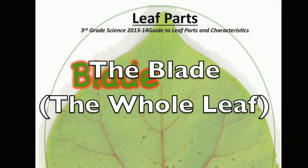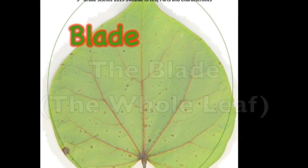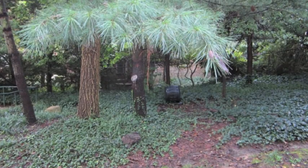Part 1: the blade, which is the whole leaf except the petiole. Blades can either be flat or needle-like. When we look at a leaf, the first part we look at is the blade. The blade is going to tell us some big general information that lets us narrow down the possibilities of what kind of tree the leaf came from.